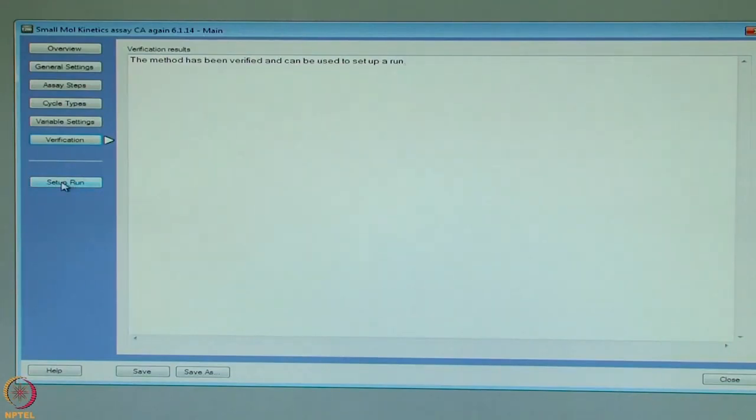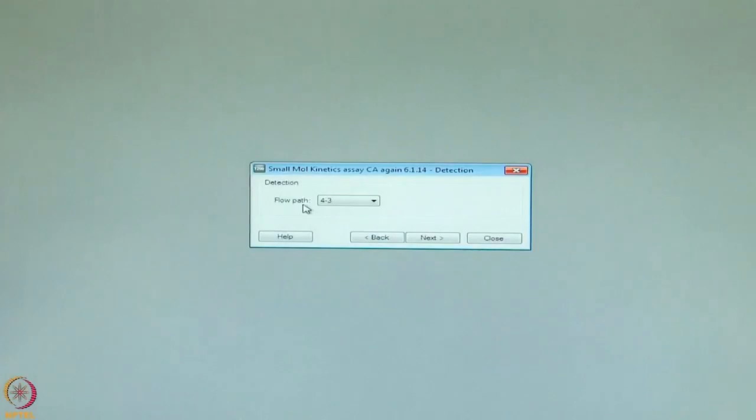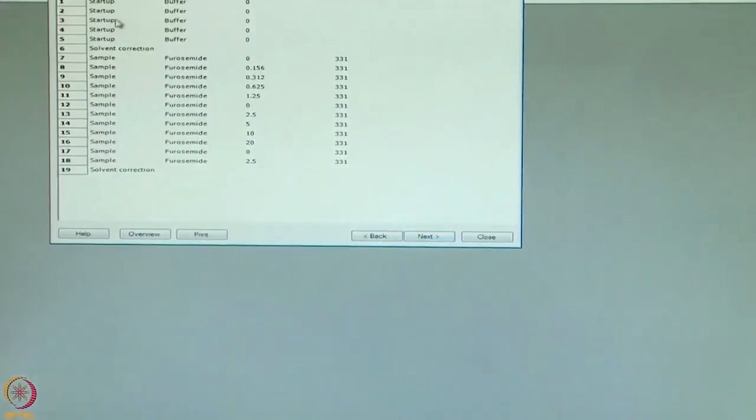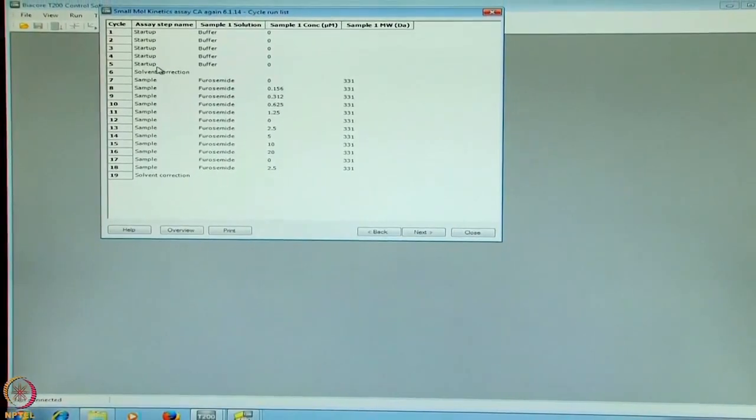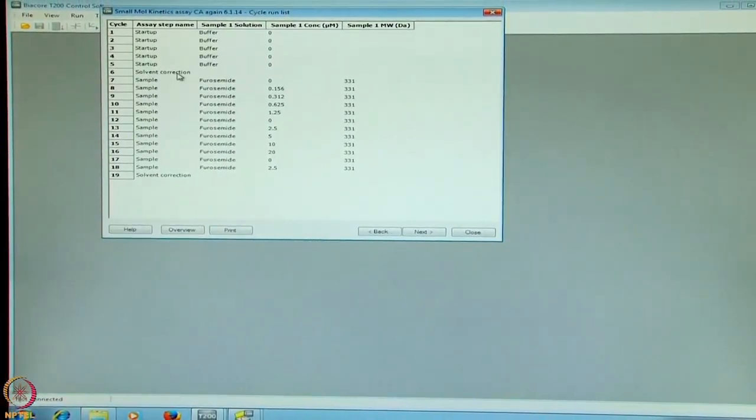We go into the setup. Here, the flow path is 4 minus 3. We go on next. We have 5 startup cycles. This means, one set of solvent correction before the run. And another solvent correction after the run. In between, we have the furosemide injected at various concentrations on the surface of the carbonic anhydrase. And the kinetic data is accumulated here.